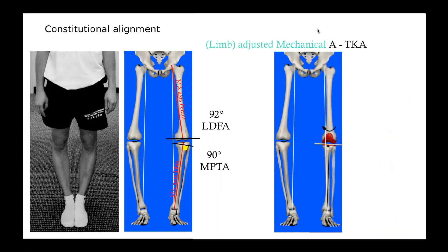With the adjusted mechanical alignment technique, the goal is to create a prosthetic limb with a few degrees of residual varus deformity. This technique only applies for patients with constitutional limb deformity — those with medial knee arthritis. The implants are aligned on the long bone mechanical axis: the tibial implant is perpendicular to it and the femoral component is slightly two degrees varus orientated.